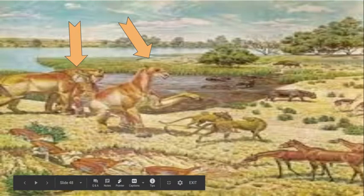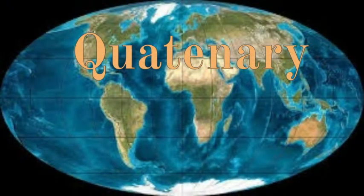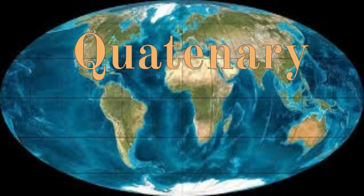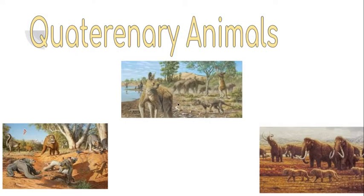The next period, which is ours, is the Quaternary — the period that we are currently in today. This is the period where the Ice Ages started to form, and the plates have moved to where they are today. Here are some animals, including the first apes, which formed during the Quaternary, the first woolly mammoths, the first saber-toothed tigers, the first sloths — you know, if you watch the Ice Age movie, you get what I'm talking about.